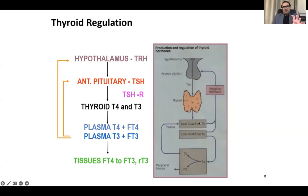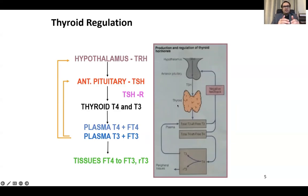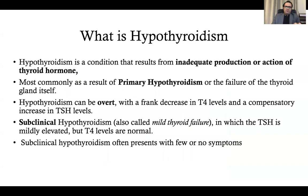There is a negative feedback mechanism from free T4 and free T3. If there is increased free T4 or T3, there will be reduced TSH. Similarly, if free T4 and T3 are low, there will be increased TSH. This is the basic physiology.